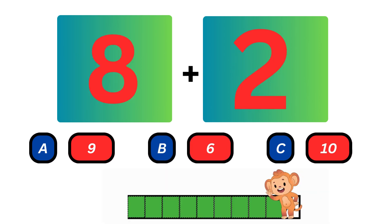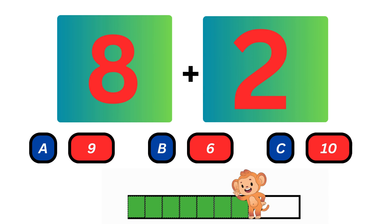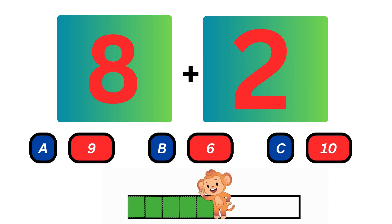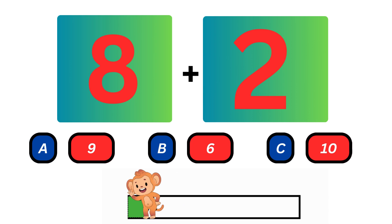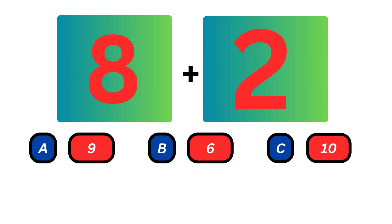What do you get when you add 8 and 2? When you add 8 and 2, you will get 10. The answer is 10.